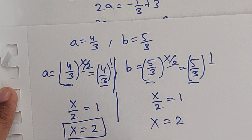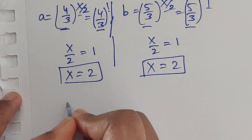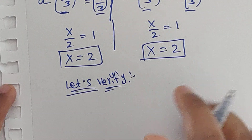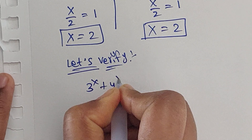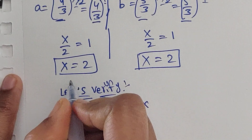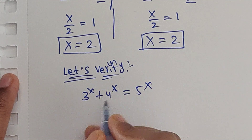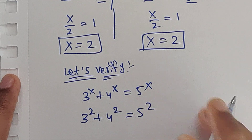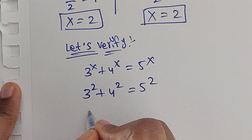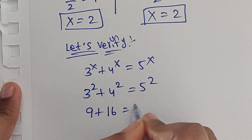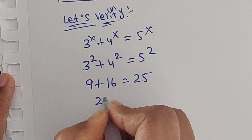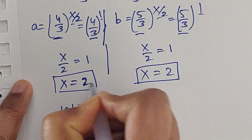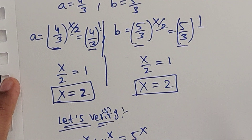Let's verify this value. Substituting x equals 2 into 3 to the power of x plus 4 to the power of x equals 5 to the power of x: 3 squared plus 4 squared equals 5 squared, which is 9 plus 16 equals 25. This is true, so x equals 2 is confirmed. Thank you for watching.